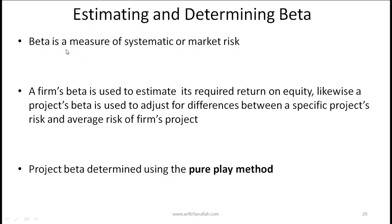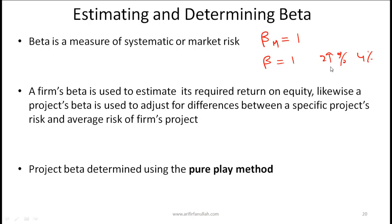Let's continue talking about beta. Beta is a measure of systematic or market risk, so a firm will have its beta and different divisions and projects within a firm will have their own beta depending on their risk level. Very simplistically, the beta of the market is equal to 1. A stock that moves up and down with the market will also have a beta of 1. If a stock is more risky — for example, if the market goes up by 2% and the firm goes up by 4%, or if the market is down by 2% and the stock comes down by twice that — then the beta is equal to 2.